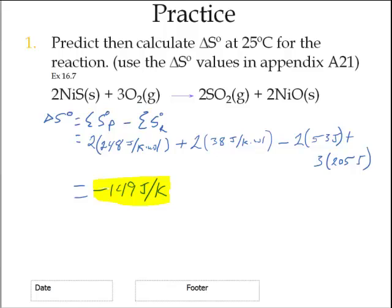All right, you can see what I did here. I got a value of negative 149 joules per Kelvin, and just as a little review of what I did, I went ahead and took the products minus the reactants from the value in the book. So I've got 2 moles of SO2, which has an entropy value of 248 joules per Kelvin mole, plus the 2 moles of nickel oxide, 38.